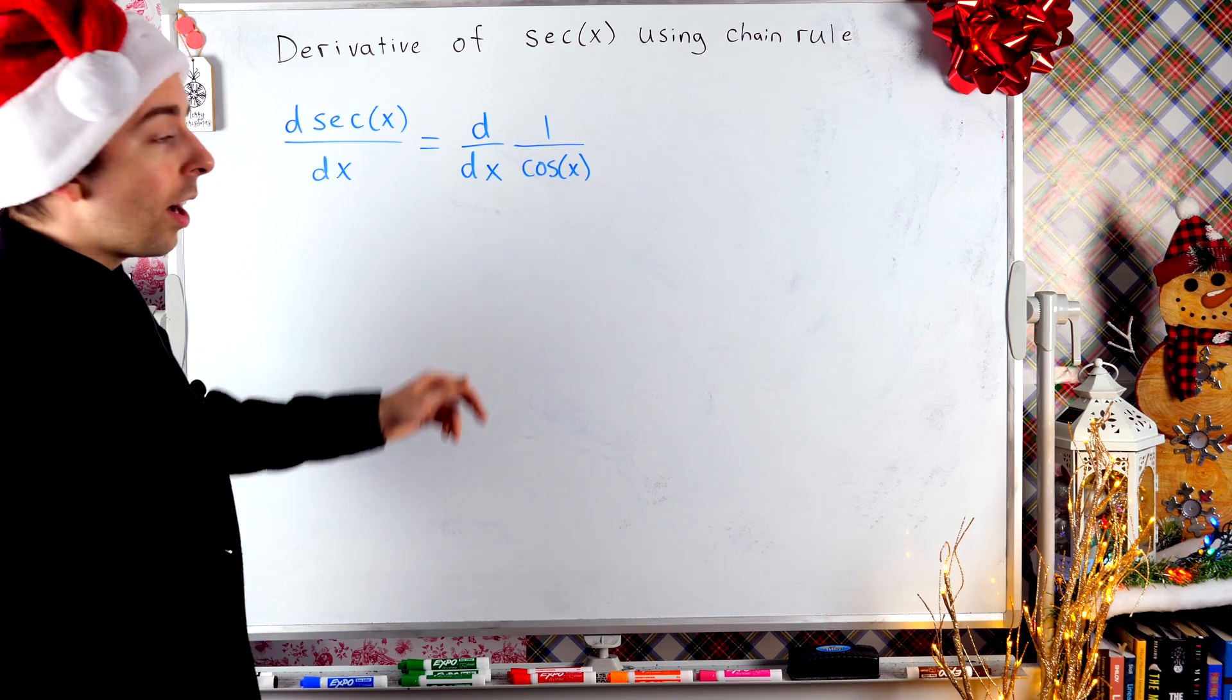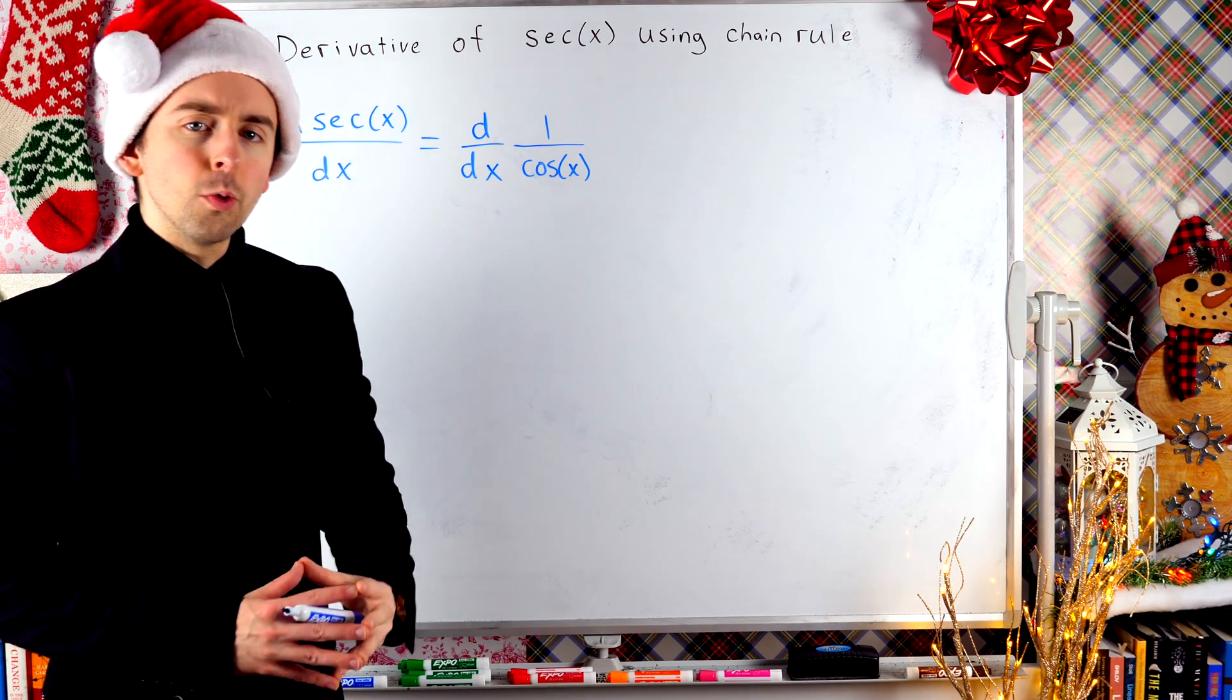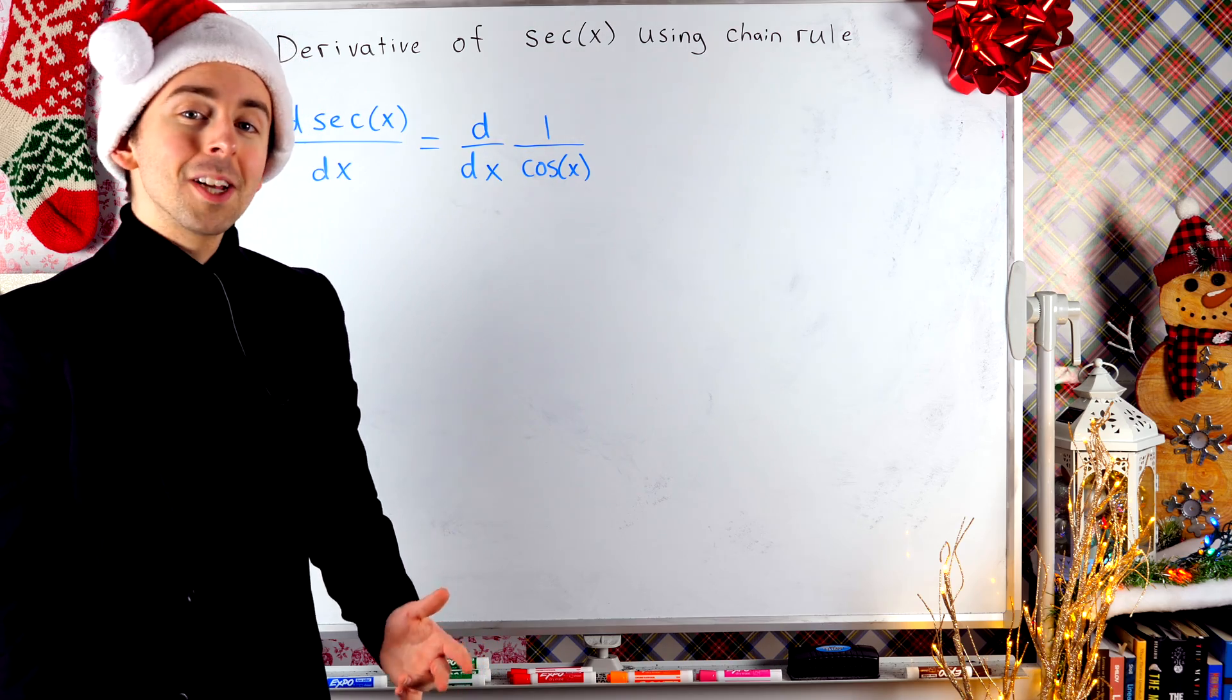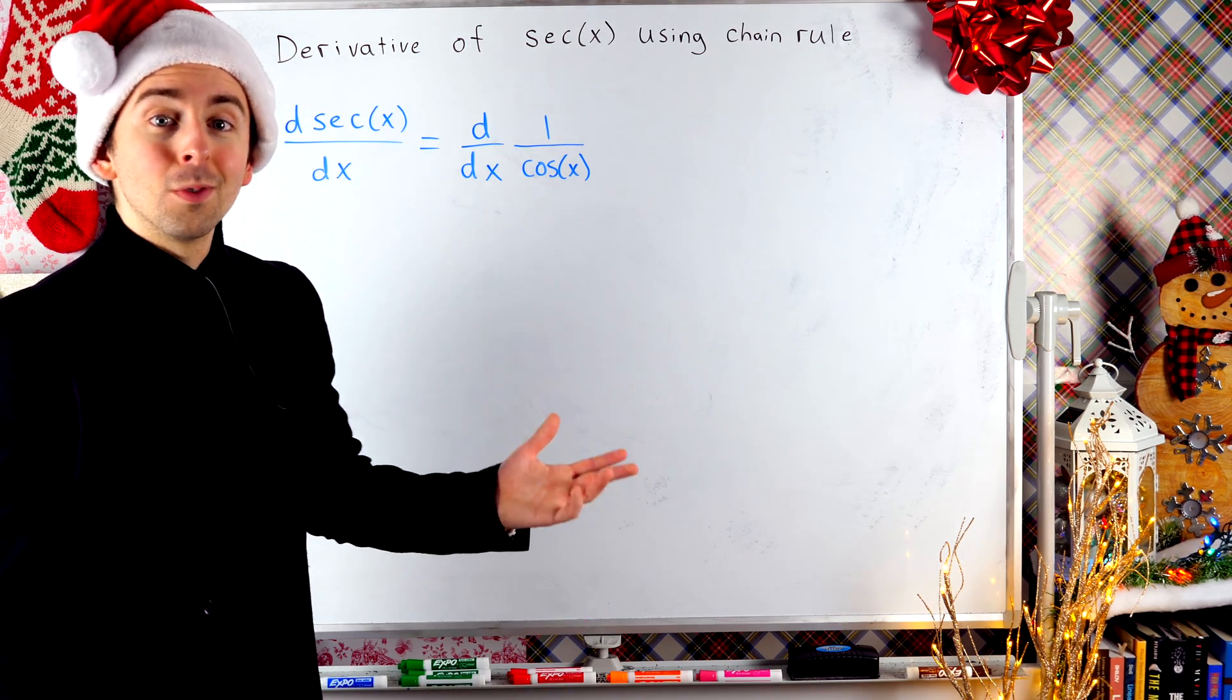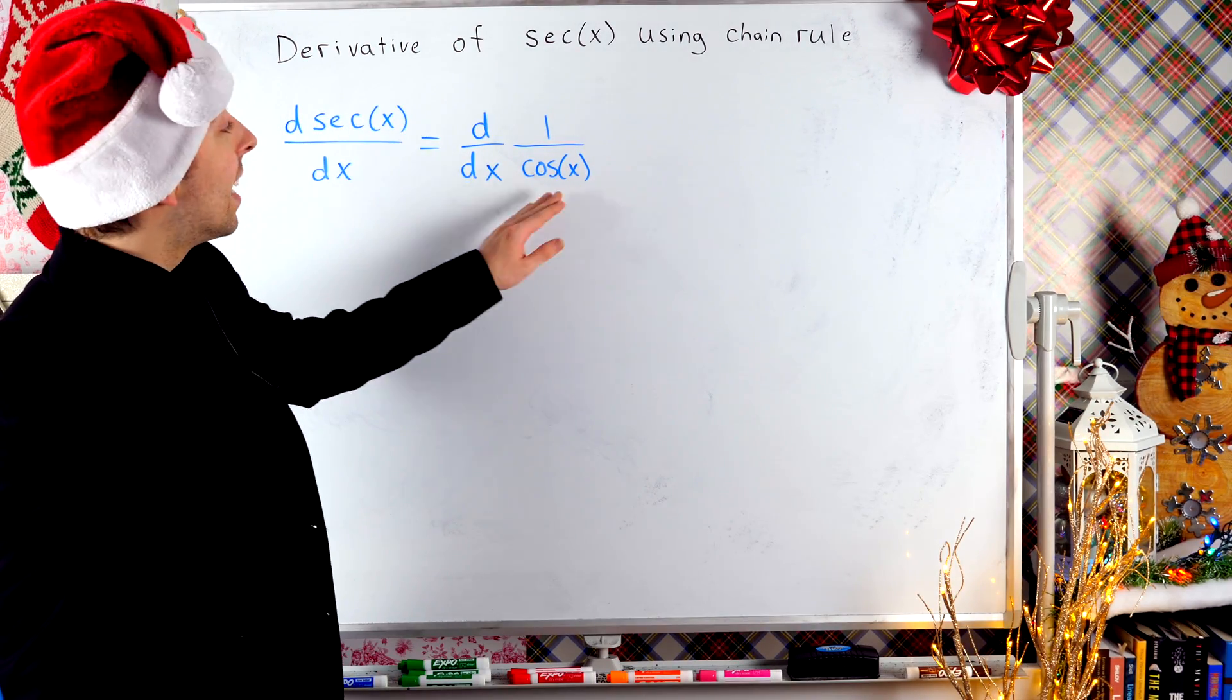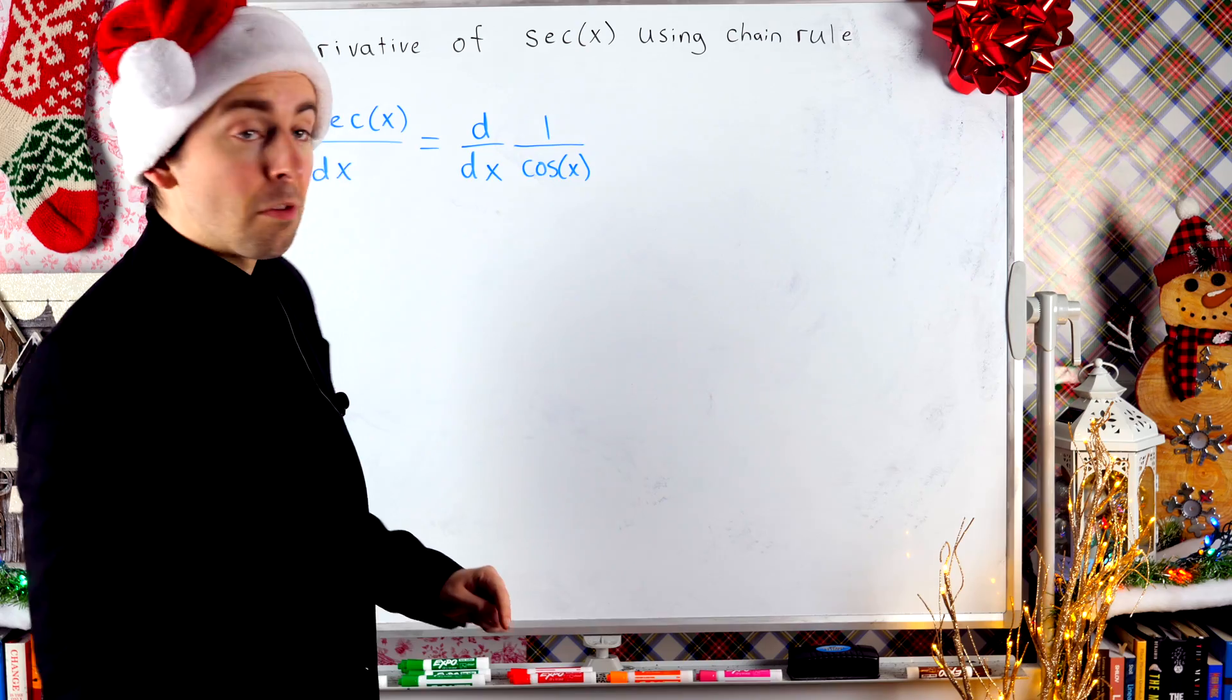Now, since I've got one divided by cosine, I could take this derivative using the quotient rule, but the quotient rule can be kind of unwieldy. I would rather use the chain rule. You could go ahead and finish this with the quotient rule for practice, but let's do it a different way.